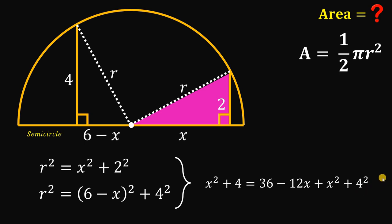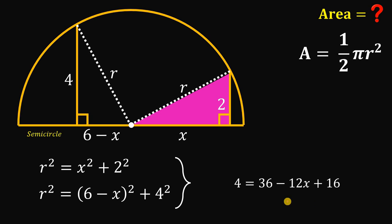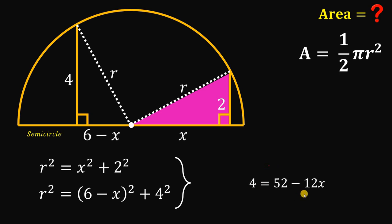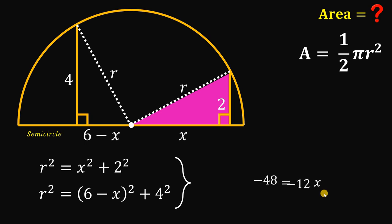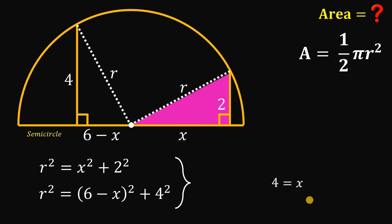Now, subtract x squared from both sides, so x squared cancels on the right-hand side. Combining similar terms: 36 plus 16 gives us 52. Subtract 52 from both sides: 4 minus 52 gives us negative 48. Then divide both sides by negative 12 to get the value of x. Negative 48 over negative 12 gives us 4. So the value of x is 4.